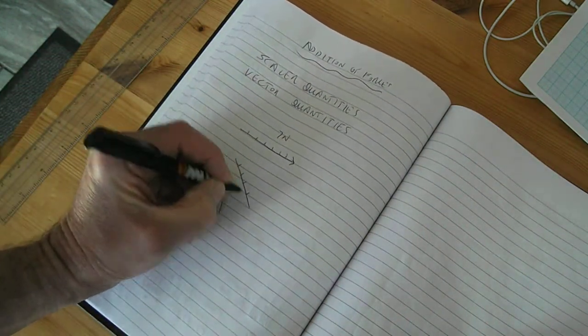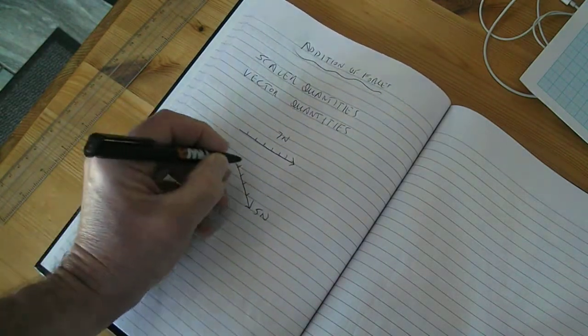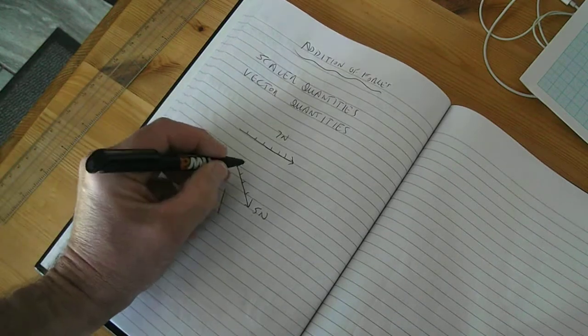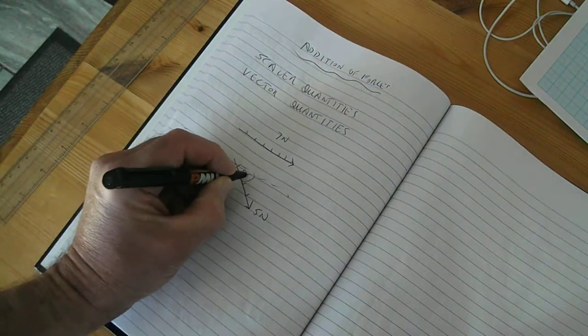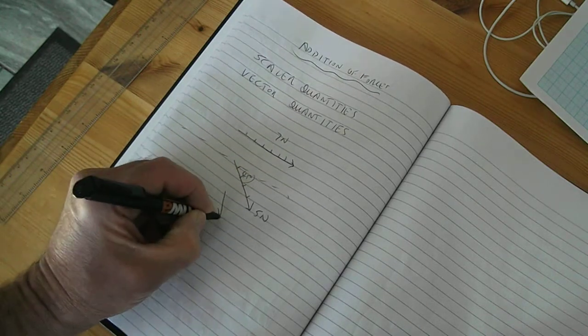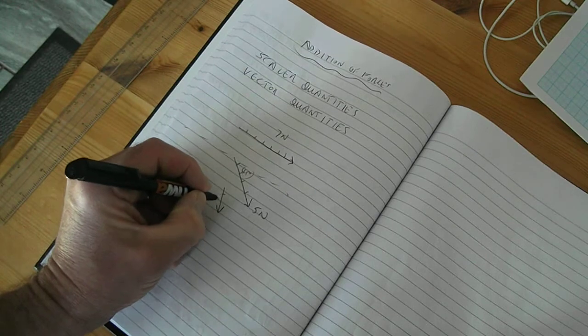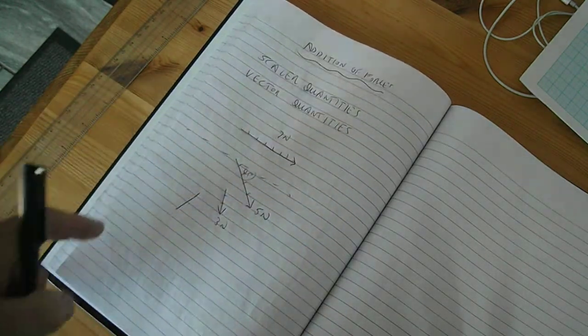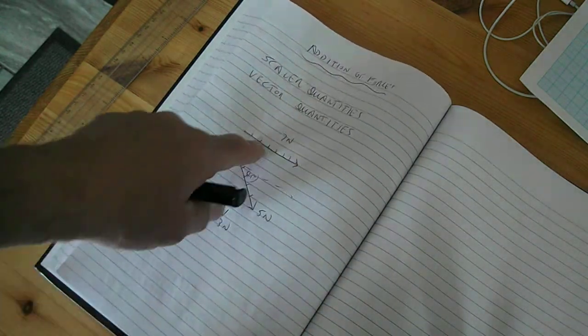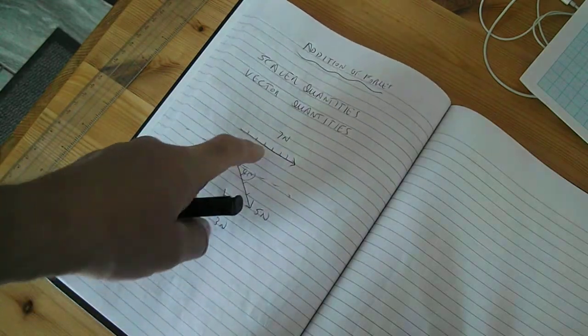I can scale this off - that could represent say seven Newtons horizontally. This one could represent five Newtons at approximately 45 degrees to the horizontal, and this one could be about 60 degrees and three Newtons. These are called vectors. A vector represents magnitude or size of the force and its direction.